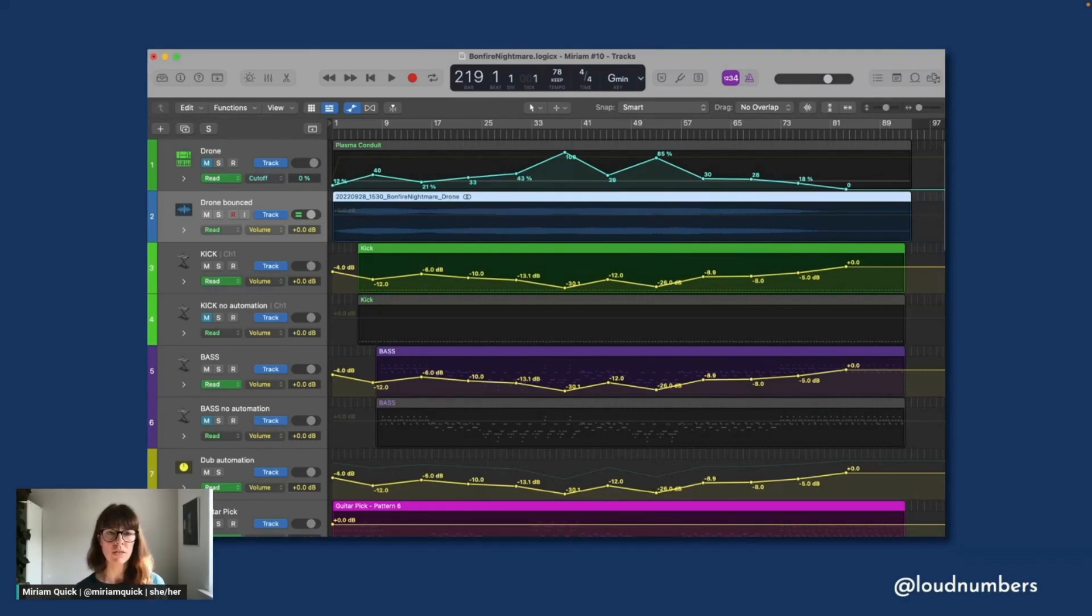And then I also mapped some of the other tracks, like the kick drum and the bass, to another parameter, volume. But this time I mapped them in an inverse way, so that as the pollution levels increase, the sound gets quieter. And these are the three yellow lines on the three tracks below the blue one.